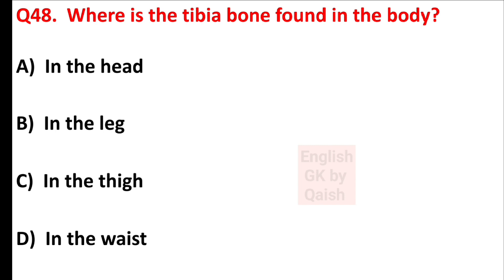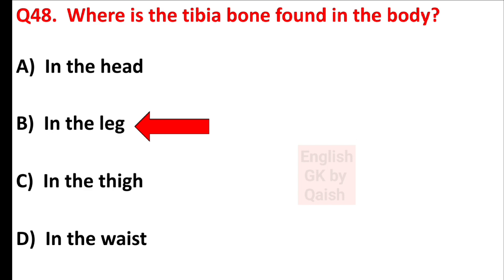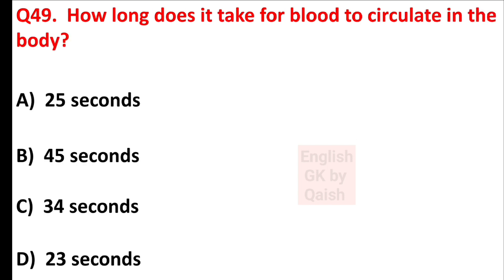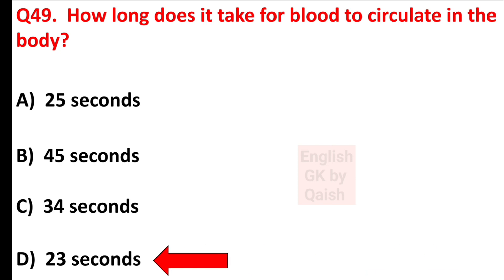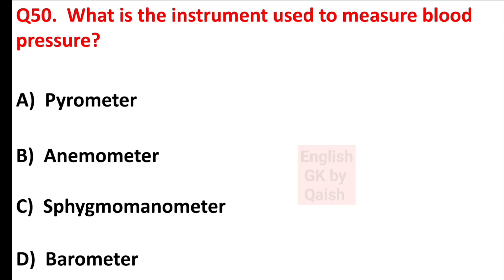Where is the tibia bone found in the body? Answer is option B — in the leg. How long does it take for blood to circulate in the body? Answer is option D — 23 seconds. What is the instrument used to measure blood pressure? Answer is option C — sphygmomanometer.